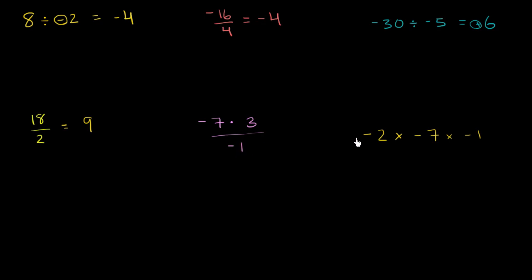Now we start doing some interesting things. Here's a compound problem — you have some multiplication and some division going on. We're going to want to multiply the numerator out. If you're not familiar with this little dot symbol, it's just another way of writing multiplication. In algebra, the dot becomes much more common because the x gets used for other things — people don't want to confuse the times symbol with the letter x.